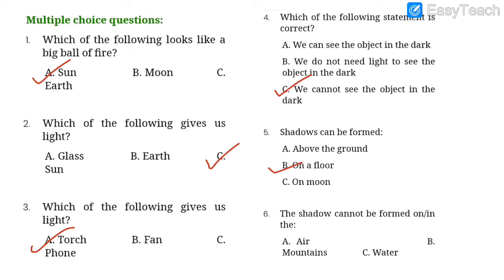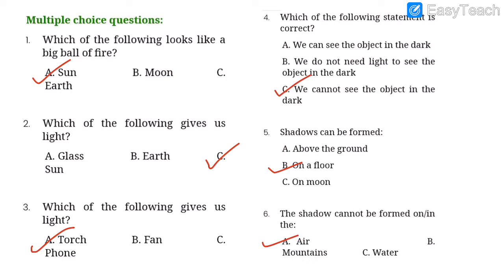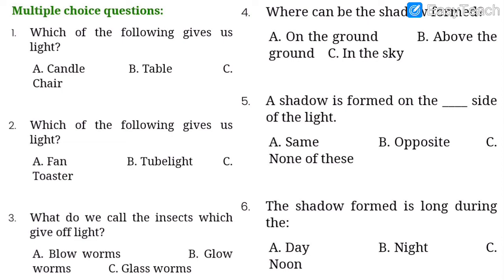Number five: shadows can be formed on the dash — above the ground, on a floor, or on the moon? Only one option is correct — option B, shadows can be formed on the floor. Number six: the shadow cannot be formed on or in the dash — air, water, or mountains? Shadows cannot be formed on air because we cannot see the air.